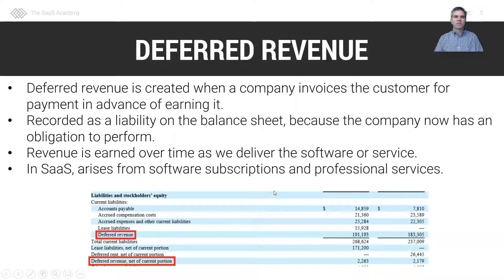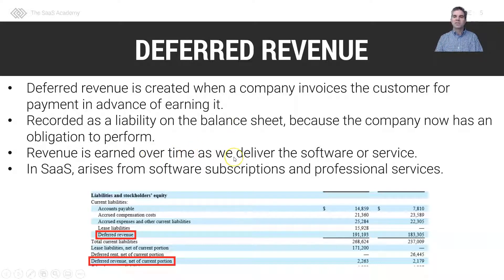Deferred revenue is created when a company invoices the customer for payment in advance of earning it. It's recorded as a liability on the balance sheet because the company has an obligation to perform or deliver a good or service. Revenue is earned over time as we deliver the software or service.